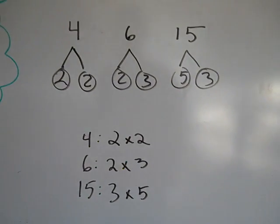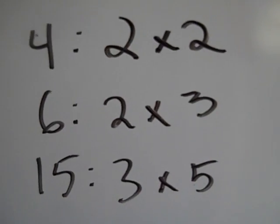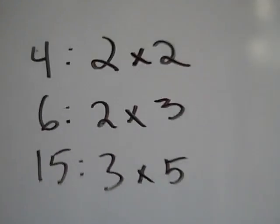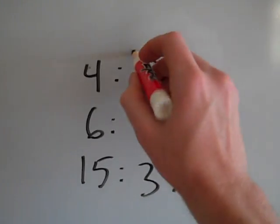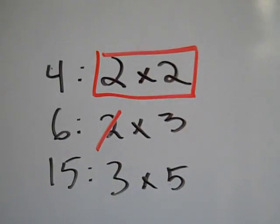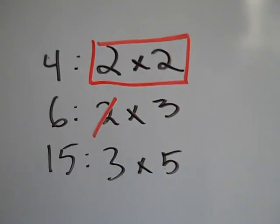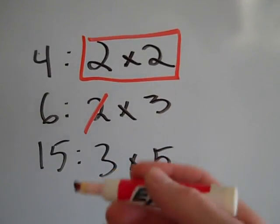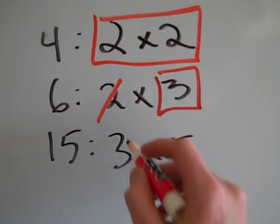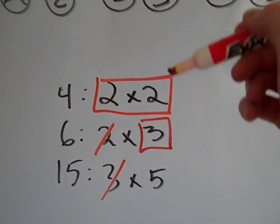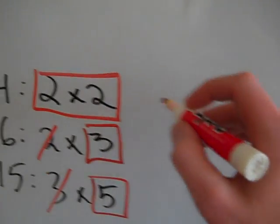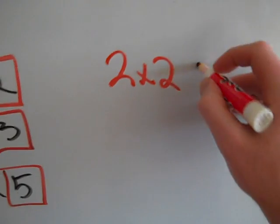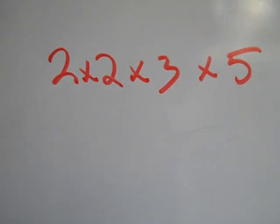Now this is how you find the LCM using these prime factorizations. First, start with the lowest prime number listed, which is 2. See which number has the most 2's in its prime factorization — 4 has the most, it has 2 of them. 6 only has one 2, so I'm not going to use that. You use whatever has the most. Then go to the next number, 3. Two numbers have a 3, but the most 3's in any one number is just 1. So at most there are two 2's, one 3, and one 5.